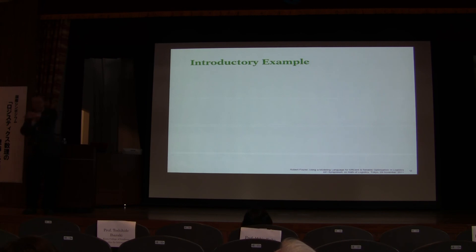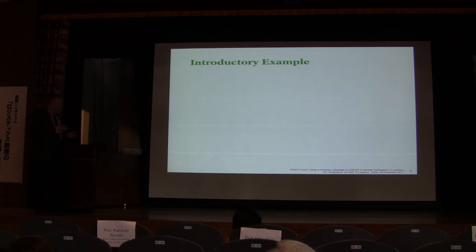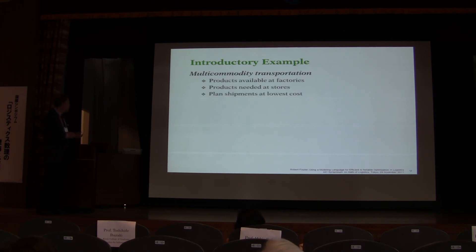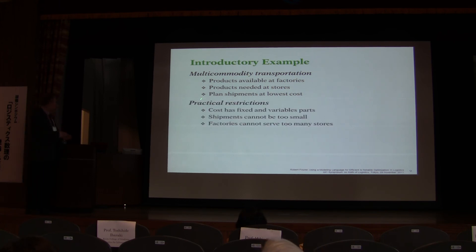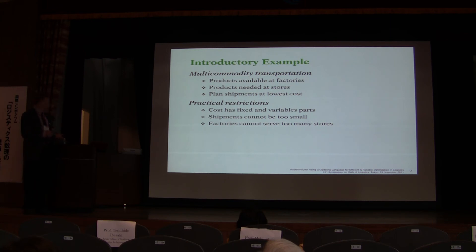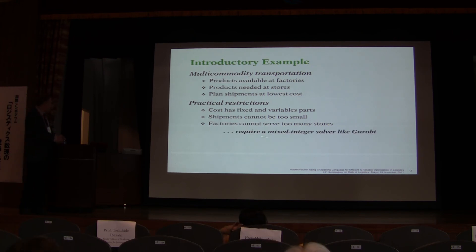Let me show a relatively simple example: a multi-commodity transportation problem. You have products available at origins, products needed at destinations, and the goal is to plan shipments at lowest cost. In addition to basic transportation constraints, there are practical restrictions: fixed costs, shipments must be at least a certain size, and factories cannot serve too many stores. These restrictions require a mixed-integer solver.